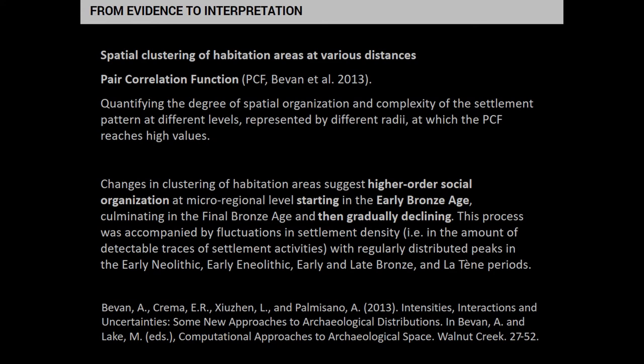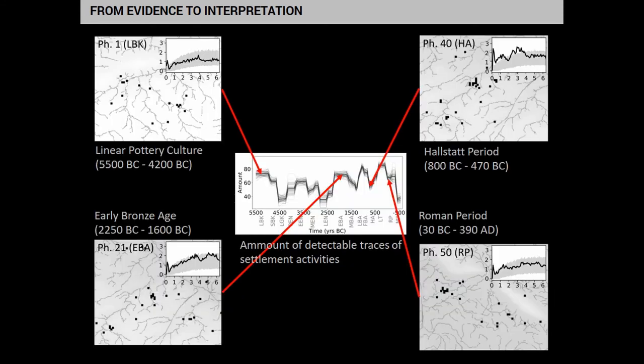We see higher-order social organization appearing in the early Bronze Age, and there seems to be a fluctuation of this. There is a peak of how the settlement was organized into groups on different levels — in the La Tène or early Iron Age — but this organization declines. The amount of settlements fluctuates over time, as does the degree of organization. Here you see the pair correlation coefficient shown for the linear pottery culture — it is within the random limits.